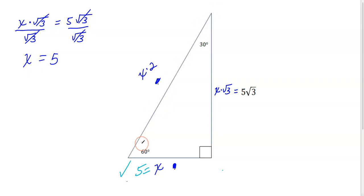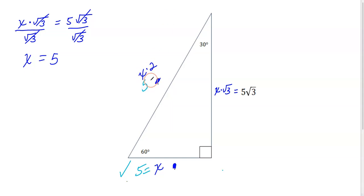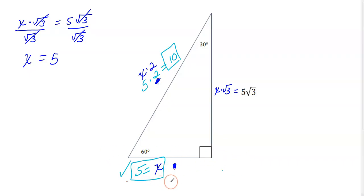The hypotenuse is X times 2, and X is 5, so 5 times 2 is 10. The short side is 5, the hypotenuse is 10, and the long leg which was given is 5 square root 3.